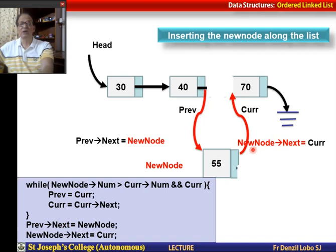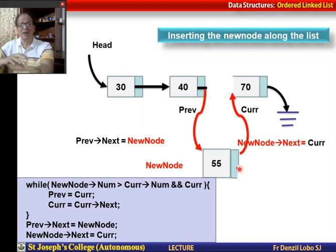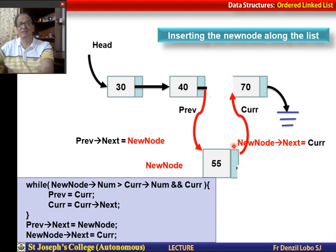So this is the complete insert node function covering three cases: Case 1 — no list exists, so the incoming node becomes the head. Case 2 — the incoming number is less than the number on the head, so make the new node the head. Case 3 — insert at the appropriate position anywhere in the list or at the end.